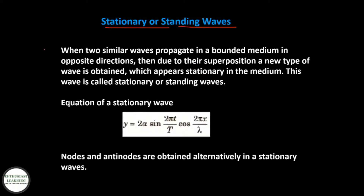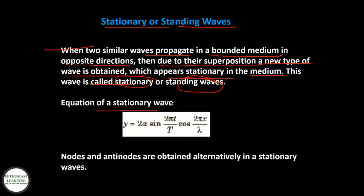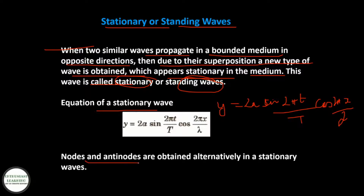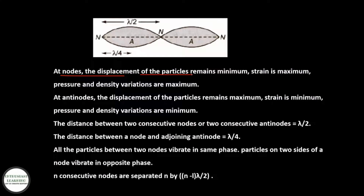Stationary or standing waves: when two similar waves propagate in a bounded medium in opposite directions, then due to their superposition, a new type of wave is obtained which appears stationary in the medium. This is called a standing wave. The equation of a stationary wave is Y = 2A sin(2πt/T) cos(2πx/λ). Nodes and antinodes are obtained alternately. At nodes, the displacement of the particle is minimum and strain is maximum.